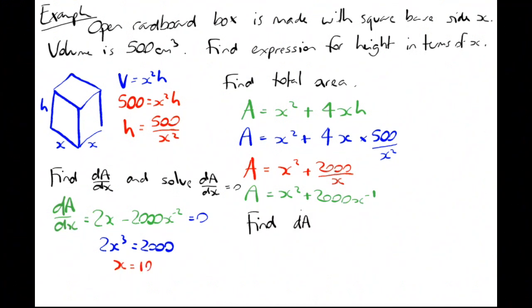Find the second derivative and show that it is a minimum. The second derivative, looking back at my dA/dx = 2x - 2000x⁻², the second derivative is just going to be 2 + 4000x⁻³.